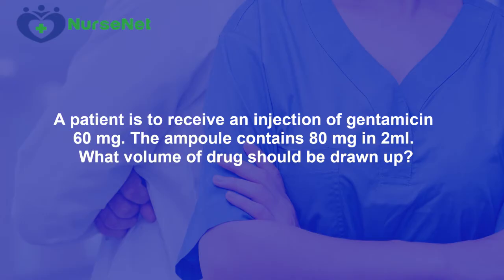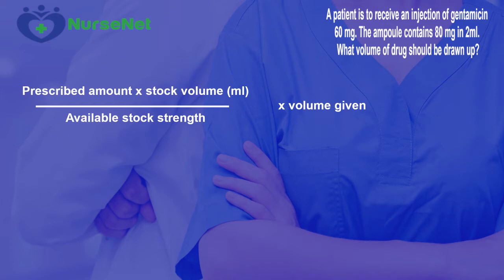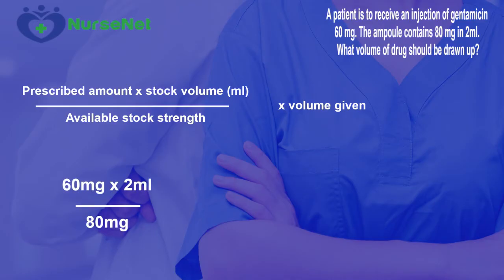To answer this question, we need to use the following formula: prescribed amount multiplied by the stock volume, divided by the available stock strength. So in this question, the prescribed amount is 60 mg, and we multiply that by the 2 ml of the stock volume.